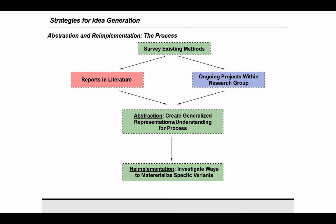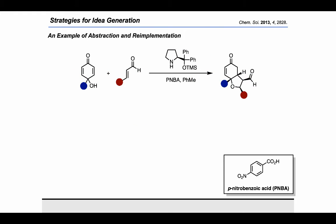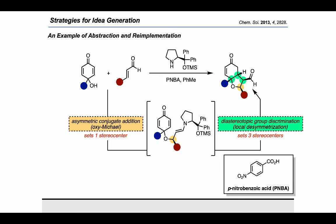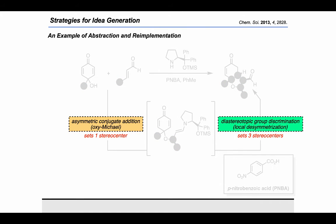I'll start with the foundational work that led to the abstraction and re-implementation. This is a reaction between a para-quinol and an enal under secondary amine catalysis, which led to a cyclized product. The reaction occurred by an initial asymmetric conjugate addition (oxa-Michael) setting one stereocenter, followed by a second conjugate addition between the enamine and the cyclohexadienone — a diastereotopic group discrimination, also called a local desymmetrization — setting three stereocenters. The key design feature is the connection between a catalytic asymmetric step that sets initial stereocenters, followed by diastereotopic group discrimination to set further stereocenters.